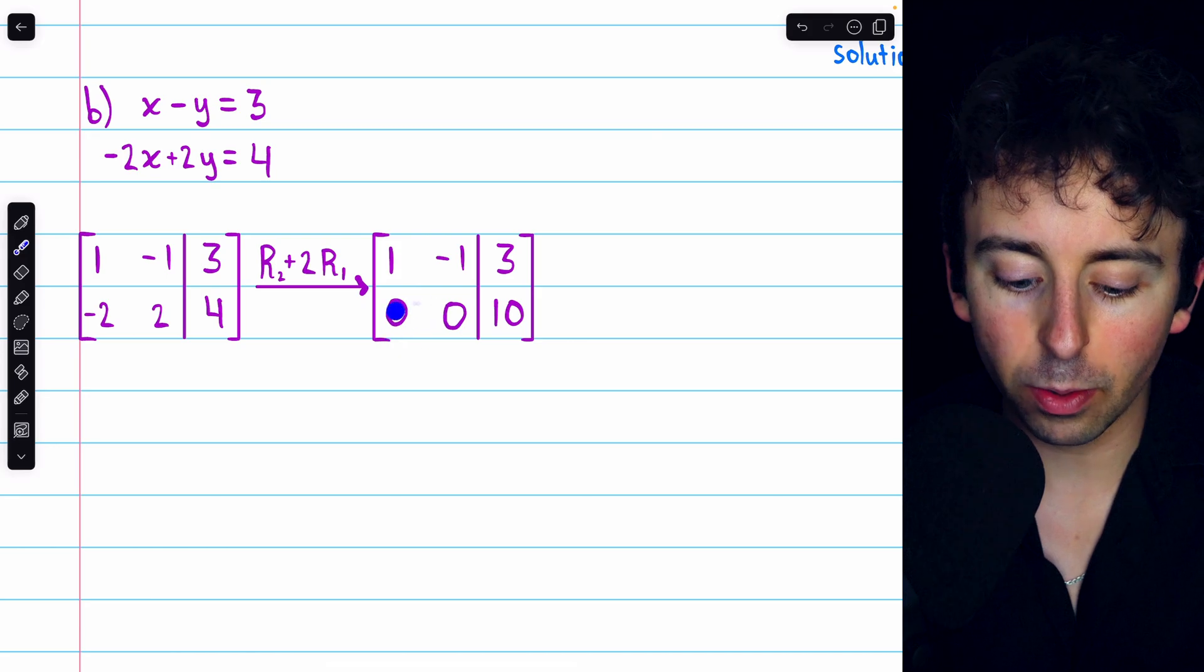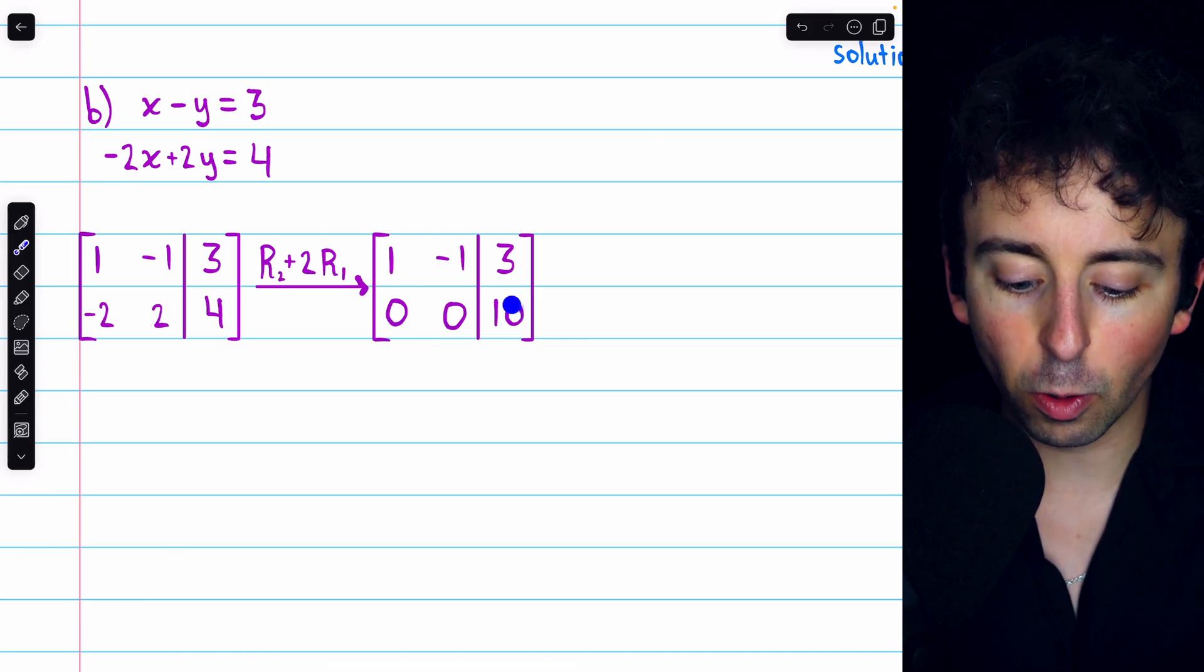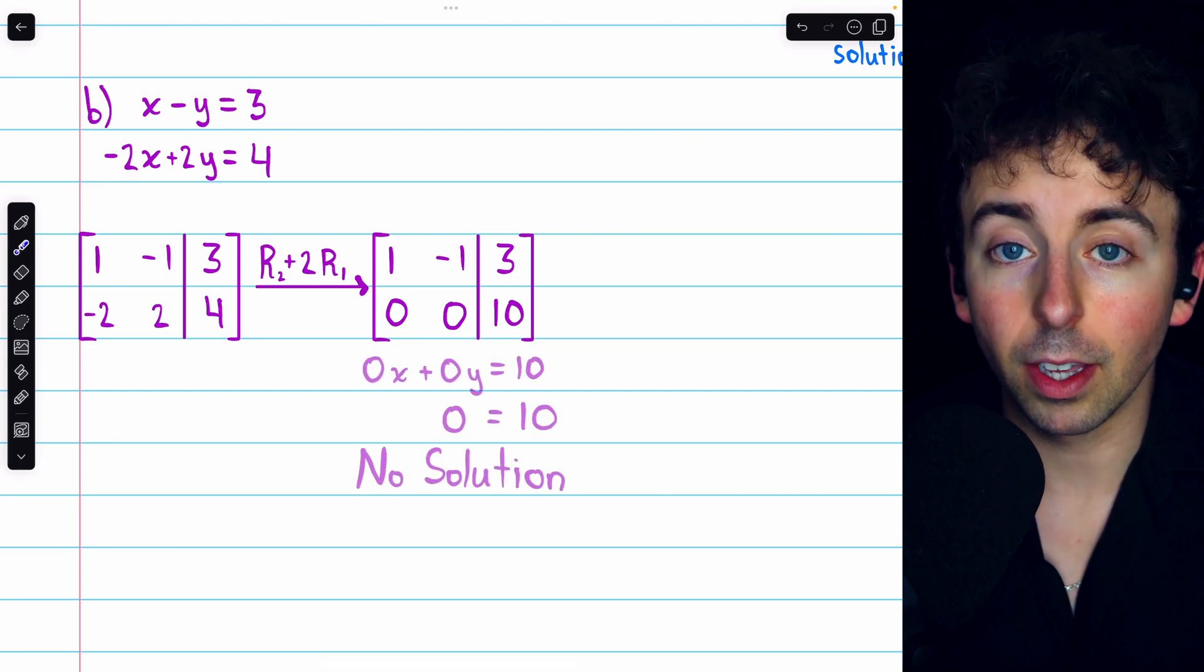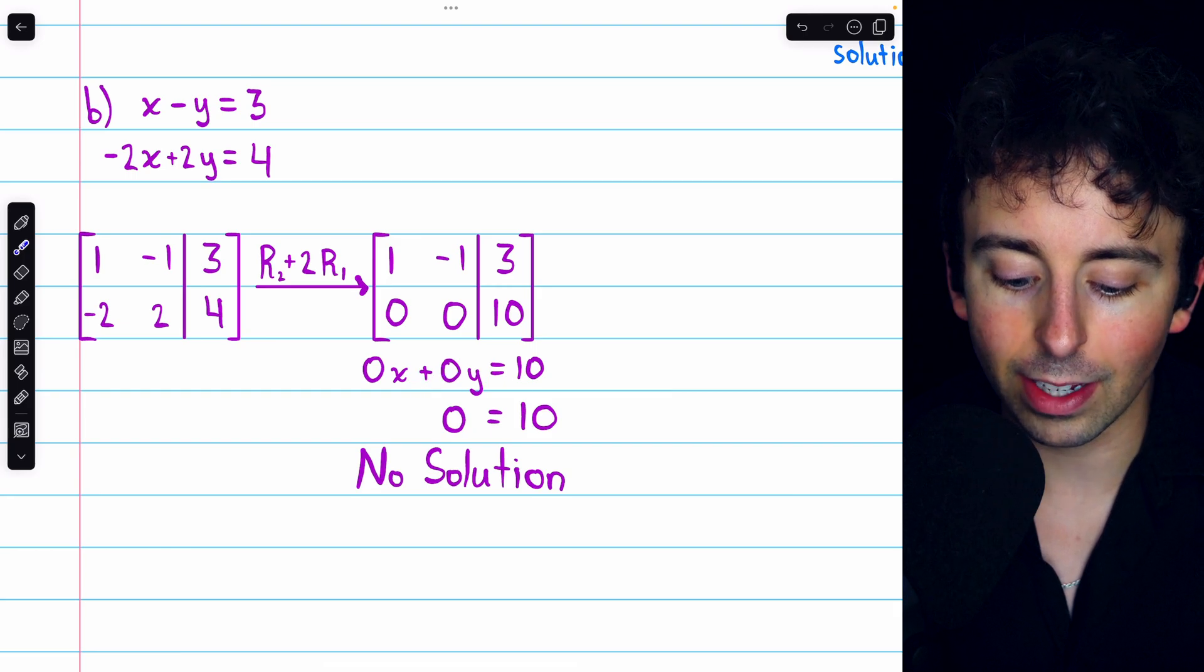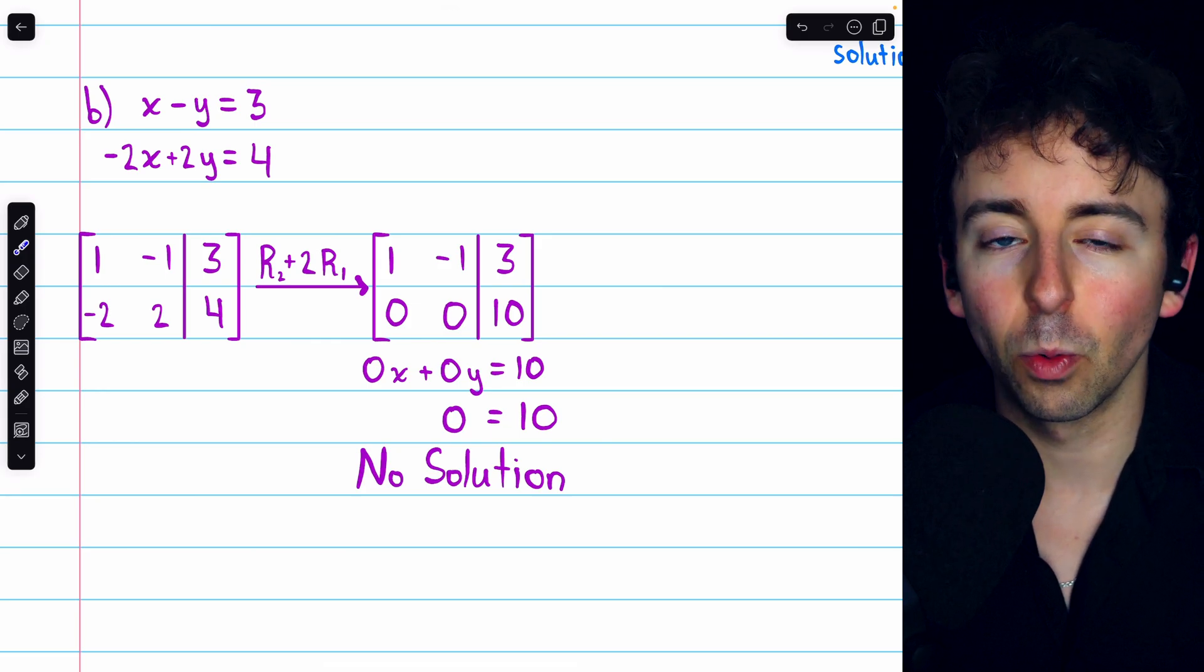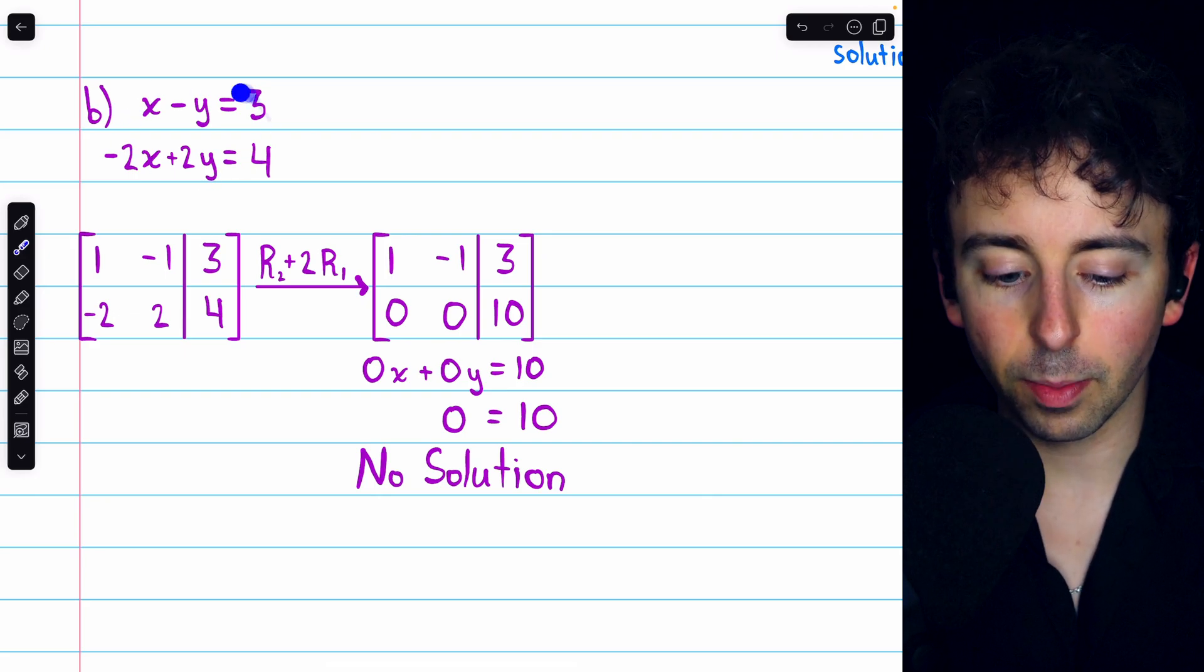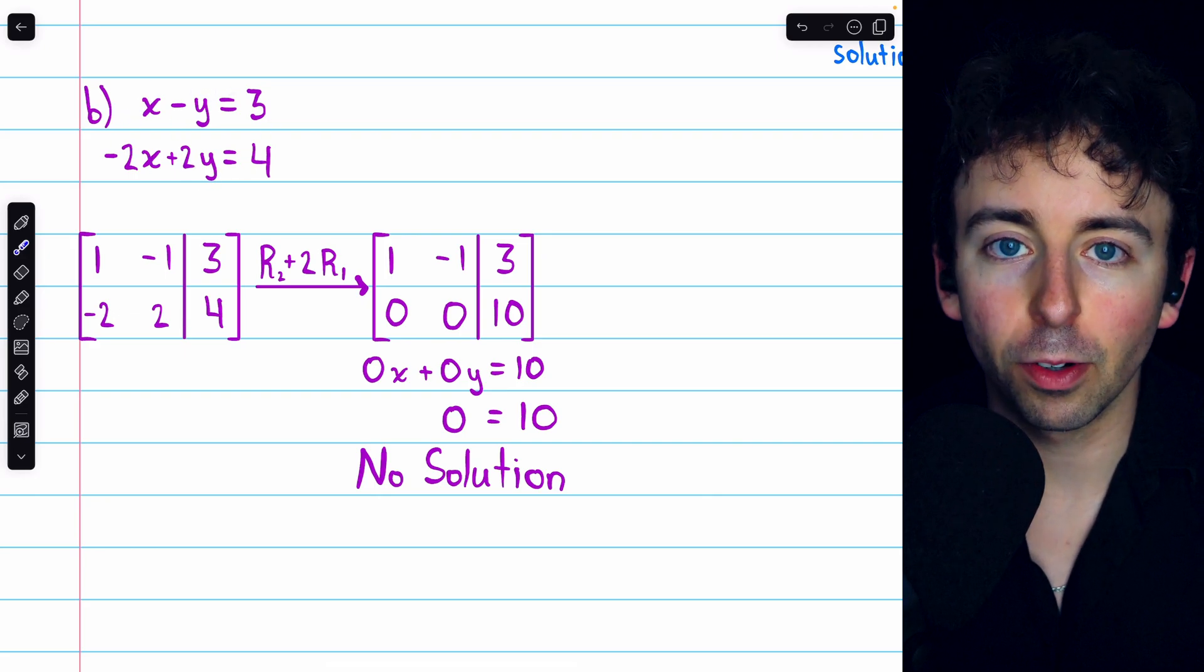Now, we have zeros as coefficients in a particular row and a non-zero number as a constant. This immediately implies a contradiction, because from row 2, we have that 0x plus 0y equals 10, which means that 0 equals 10. There is, of course, no value for x and y that would make this true, so this system has no solution. This system consists of two parallel lines that never intersect.